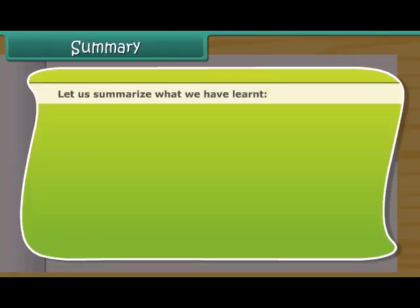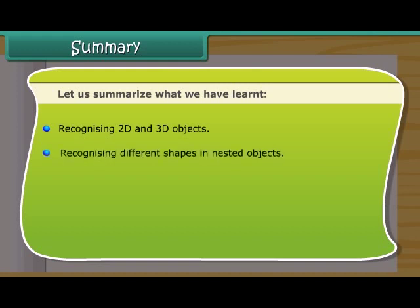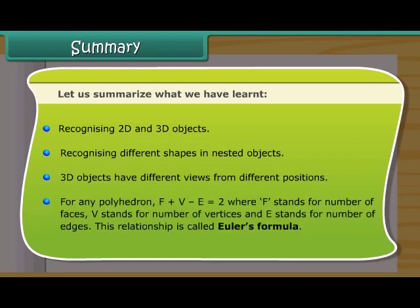Let us summarize what we have learned. Recognizing 2D and 3D objects. Recognizing different shapes in nested objects. 3D objects have different views from different positions. For any polyhedron, F plus V minus E is equal to 2, where F stands for number of faces, V stands for number of vertices, and E stands for number of edges. This relationship is called Euler's formula.